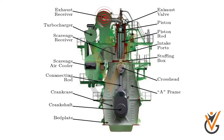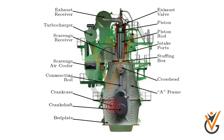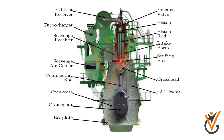The components include: exhaust manifold, turbocharger, scavenge manifold, scavenge air cooler, connecting rod, crank case, crankshaft, bed plate, exhaust valve, piston, piston rod, inlet port, stuffing box, crosshead, and A-frame.